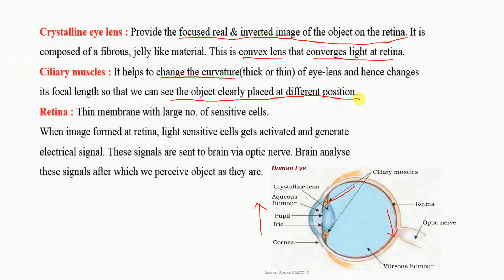The next part is the retina. The retina is a membrane with a large number of sensitive cells. When an image is formed at the retina, the light-sensitive cells get activated and generate electrical pulses. These signals are sent to the brain via the optic nerves, and the brain analyzes these signals, after which we perceive the object.